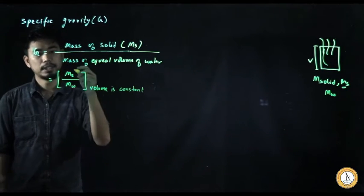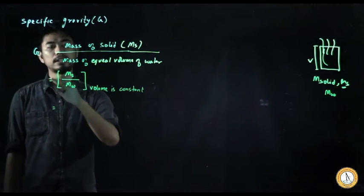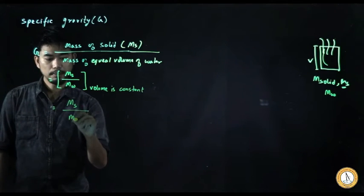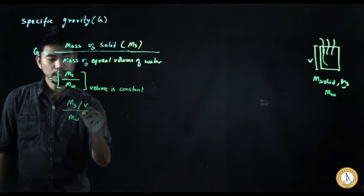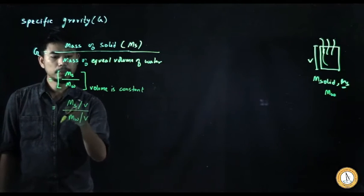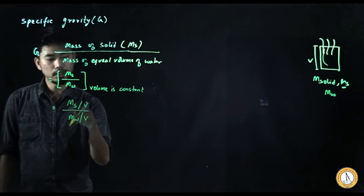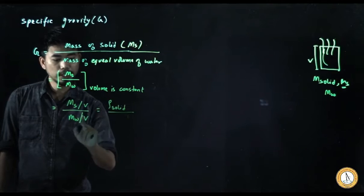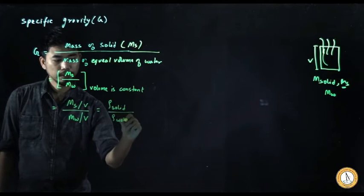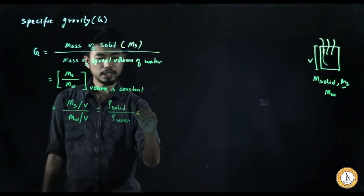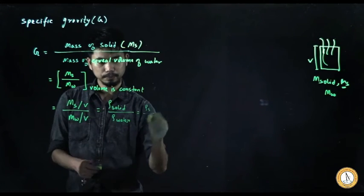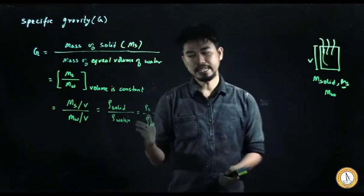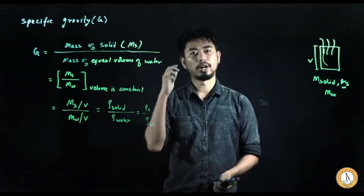This is not the most commonly used formula. The most used formula is derived by dividing both mass of solid and mass of water by volume V. Mass divided by volume is density, so we get density of solid divided by density of water — that is, ρs by ρw. So specific gravity is also the ratio of the density of solid to the density of water.